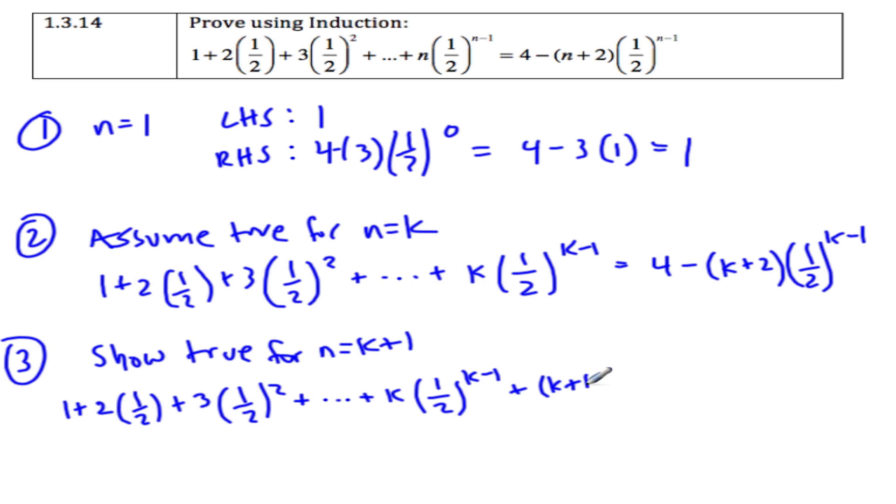so we have k plus 1, 1 half, k plus 1 minus 1 is just k, and that should be 4 minus k plus 3, 1 half, to the k. So this right here is my substitution, and this is my goal.